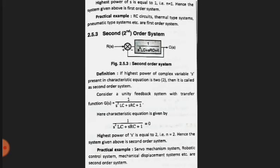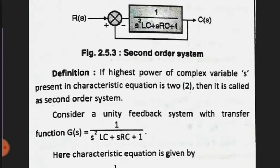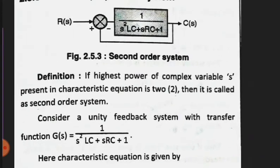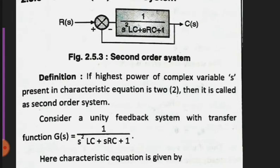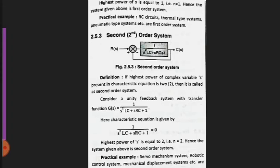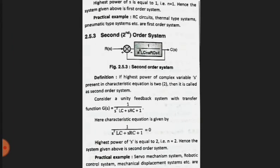Now the last system is our second order system. The transfer function is 1/(s²Ls + sCR + 1). The highest power of s is 2. The definition is: if the highest power of complex variable s present in the characteristic equation is 2, then it is called the second order system.